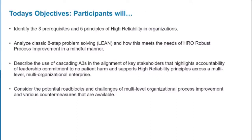Our objective today is to identify the three prerequisites and the five principles of high reliability organizations. We want to analyze the classic eight-step problem solving known as lean and how this meets the needs of HRO robust process improvement in a mindful manner. We'll describe our use of cascading A3s in alignment of key stakeholders that highlights accountability of leadership, commitment to no patient harm, and supports high reliability principles across a multi-level, multi-organizational enterprise. And we'll consider the potential roadblocks and challenges of doing multi-level organizational process improvement and the countermeasures we found.